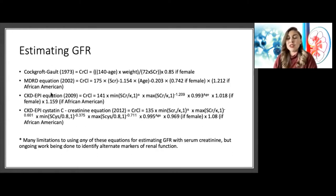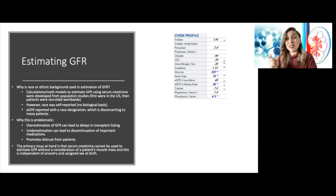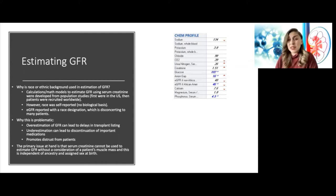Why did they do that? This only happens in the US — in other countries you don't see a race coefficient put into the estimate of GFR from serum creatinine. There are complex social factors and examples of structural racism that led to this. Ultimately, what led to this were population studies where race was self-reported by patients. When they compared GFRs for different patients based on serum creatinine, they found that people who self-identified as African-American tended to have higher GFRs for a given serum creatinine level.